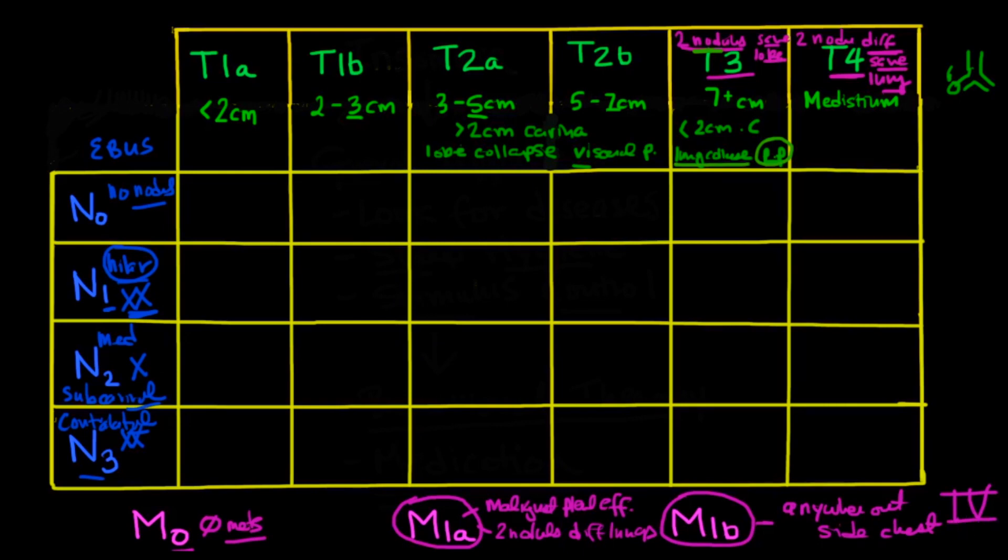And I'll just say that if you meet the criteria, unfortunately, for an M1A or an M1B, that's an automatic stage 4. We're going to write these stages in Roman numerals. So regardless of your N or T, if you meet any of these criteria, you're automatically stage 4. So that's important because if you've got a patient with a malignant pleural effusion, that automatically puts them at stage M1A, which automatically gives them a stage 4.